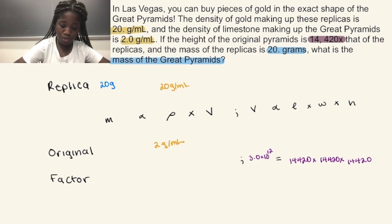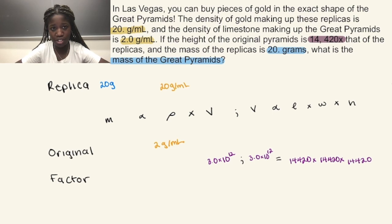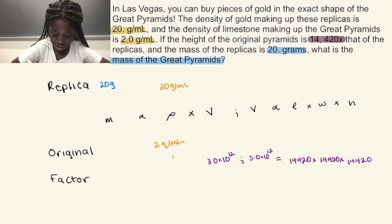And so we can carry that over to the leftmost equation. And now we can solve for the factor for density. If you take the original density divided by the replica density, you will get the factor is one-tenth.